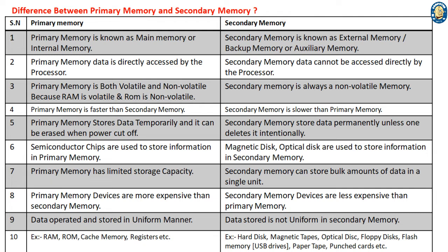10. Examples of primary memory: RAM, ROM, cache memory, registers, etc. Examples of secondary memory: hard disk, magnetic tapes, optical disk, floppy disks, flash memory, paper tape, punched cards, etc.